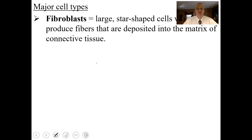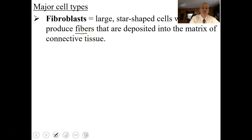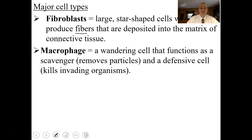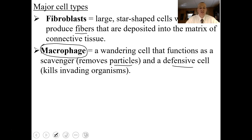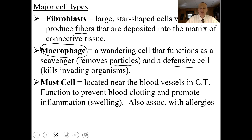The major cell types found in connective tissues include fibroblasts — large, star-shaped cells that produce the fibers deposited in the matrix. There are also macrophages, which are really important cells that wander around and function as scavengers. They remove particles — if you have a tattoo, they actually eat the tattoo ink. They are also defensive, killing invading organisms. So macrophages are wandering around eating up particulate matter and any invading organisms.